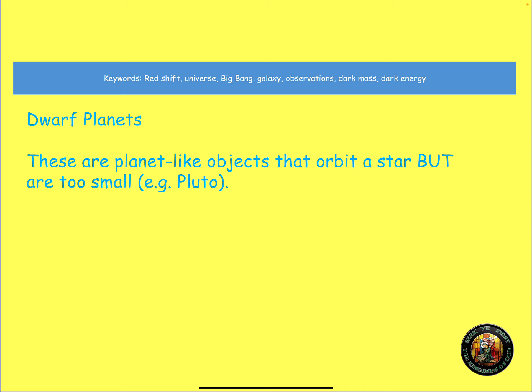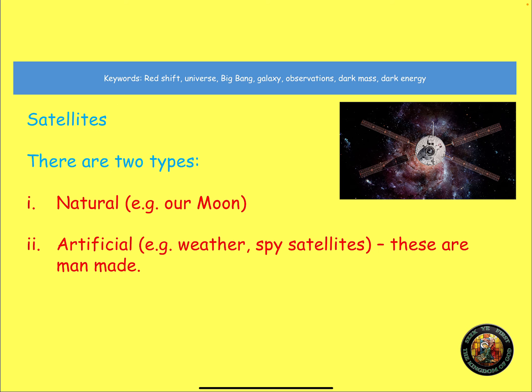Dwarf planets, these are planet-like objects that orbit a star but are too small, and Pluto is termed a dwarf planet. Now, a satellite is an object that orbits a planet, and there are two types here. There are natural, our natural satellite is the moon, and then there are artificial satellites that man has made and then placed in orbit. And these are such like weather satellites, spy satellites.